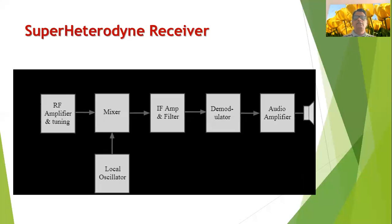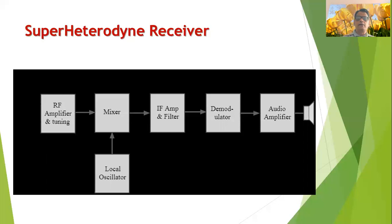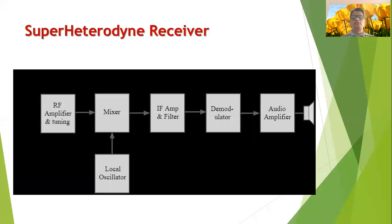The TRF receiver is a basic receiver, and it suffers from a large number of drawbacks. The TRF receiver is an unstable receiver and does not have a constant bandwidth. Therefore, the TRF receiver is commercially not used. Another type of receiver that is more popularly used is the super heterodyne receiver. The block diagram of the super heterodyne receiver shows that some of the stages present in the TRF receiver are also present in the super heterodyne receiver. The only difference is that the super heterodyne receiver has some additional stages such as a mixer, local oscillator, and IF amplifier.